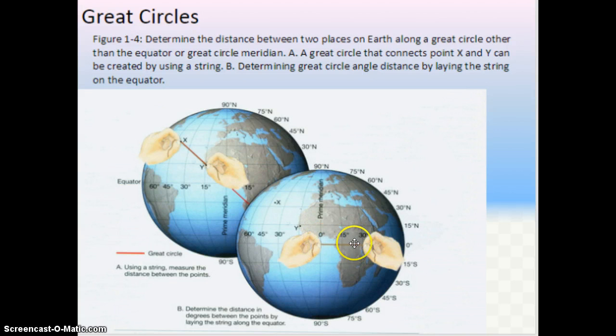If it's 30 degrees, I can take 30 degrees times 69 miles to find the distance between x to y, or if it's in kilometers, I can take 30 degrees times 111. But essentially, the string, what we want to do is create a great circle here.